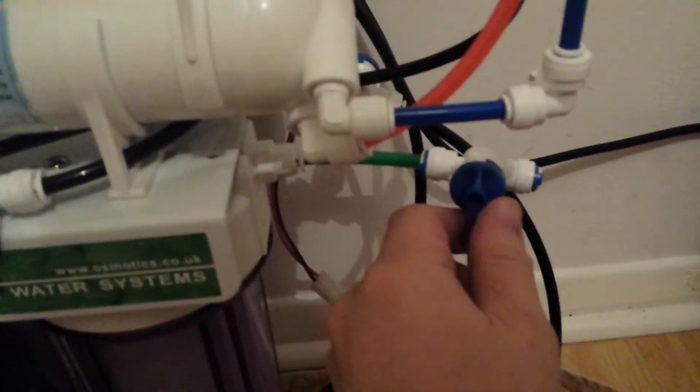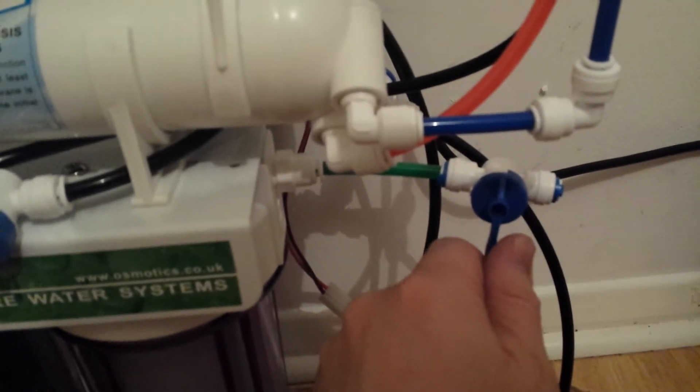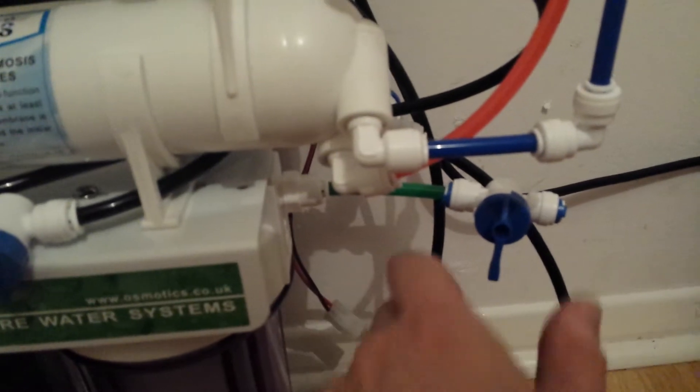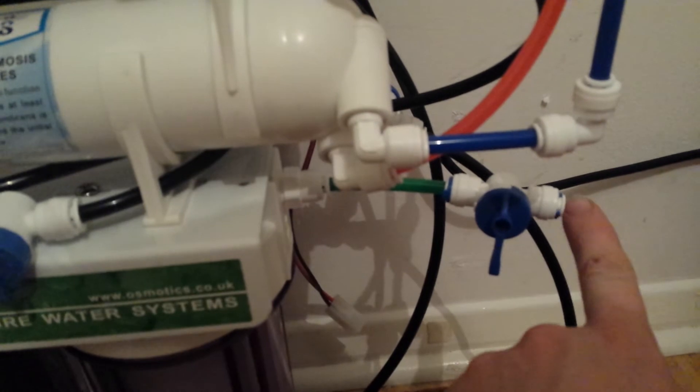I'll put taps on the water in, water out, and the waste so I can disconnect here, which will be going out to my outside tap. I'm also going to get an adapter so I can use it under the kitchen sink.